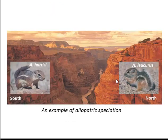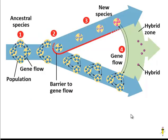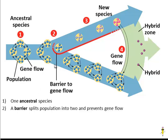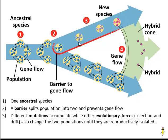For example, consider these two squirrel species separated by a huge barrier. Imagine this is the original ancestral squirrel species. A change in the environment splits that population into two different populations. Because of that barrier, genes can't flow between the two populations. Over time, mutations accumulate in one population that are different from those in the other. Meanwhile, other forces of evolution like natural selection or genetic drift also act on these mutations and change the populations in different ways. Those changes build up until the two populations are so different that they are now reproductively isolated.